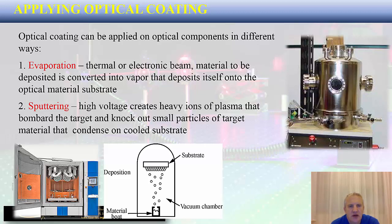Two distinct processes are used in photonics to deposit optical coatings: evaporation and sputtering. In evaporation, the material to be deposited is converted into vapor using a thermal or electron beam, and that vapor deposits onto the optical substrate. The duration must be controlled because the longer the process continues, the thicker the coating becomes. A dynamic measurement mechanism stops the process when the desired thickness is achieved.